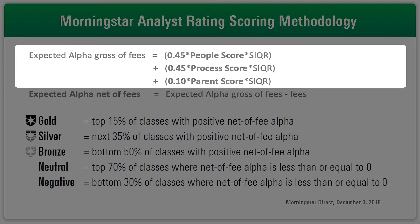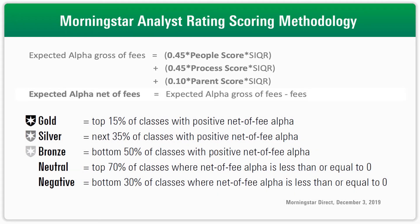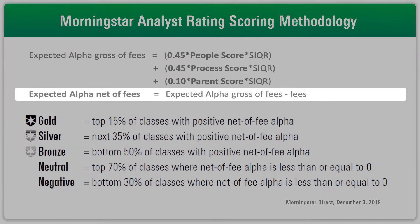For example, a fund in the US large cap space will generally have a lower semi-IQR, since most managers typically tend to return something close to the category average. A fund in something more specialized, like perhaps global small or mid-cap equities, might have a wider dispersion of returns, which would result in a higher semi-IQR. We then take this expected gross-of-fee alpha calculation and explicitly subtract the appropriate fees to arrive at the expected net-of-fee alpha.